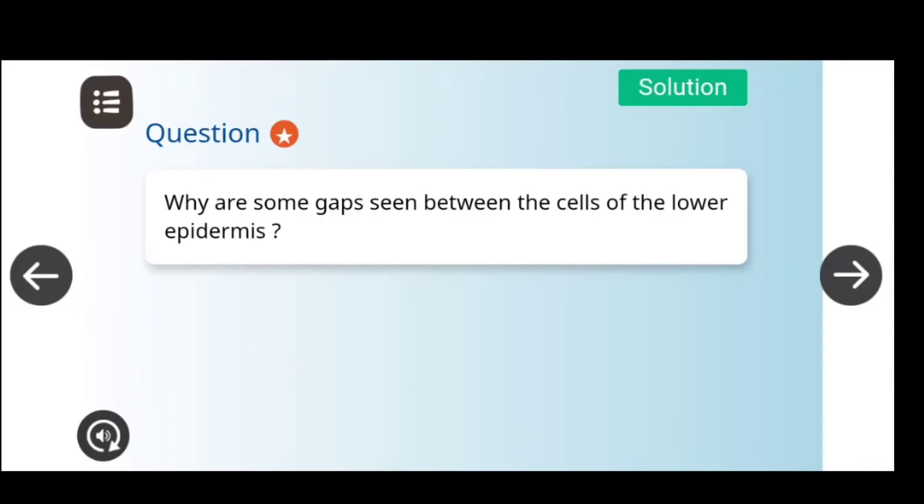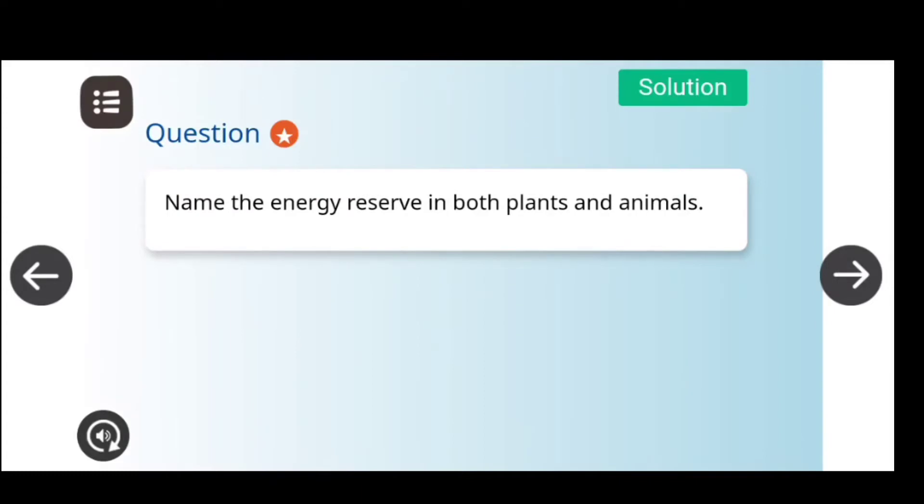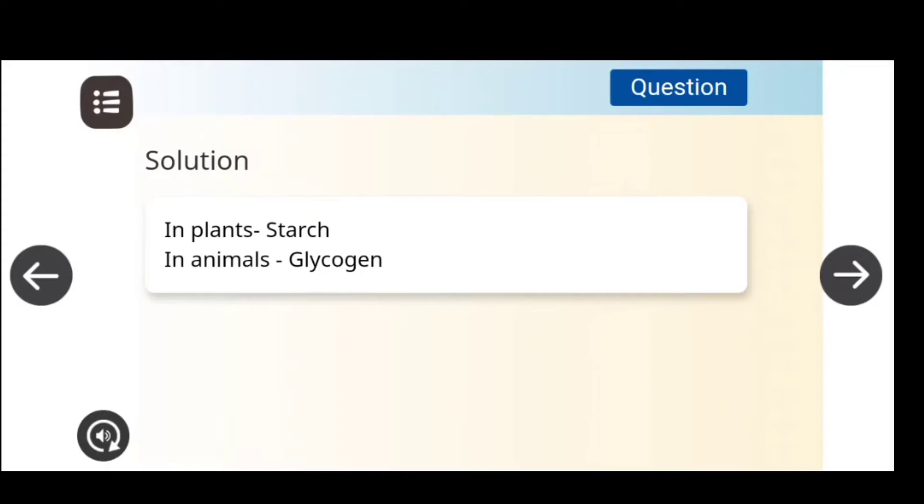Why are some gaps in between the cells in the lower epidermis? The solution is for exchange of gases and transpiration. Next question: Name the energy reserve in both plants and animals. In plants, starch energy is stored. In animals, glycogen energy is stored.